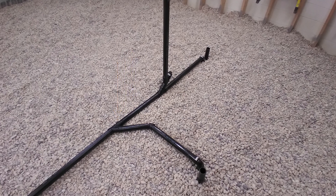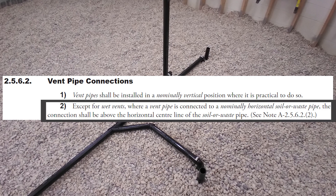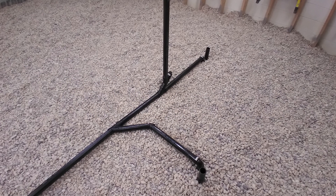While we're looking at this picture I want to go through a really important code clause 2562 number 2: except for wet vents, where a vent pipe is connected to a normally horizontal soil waste pipe, the connection shall be above the horizontal center line of the soil waste pipe. There are two scenarios we can draw out of that code clause. This clause is talking about joining a vent into a horizontal piping arrangement and how it needs to come out above the horizontal center line, which this continuous vent right here does.